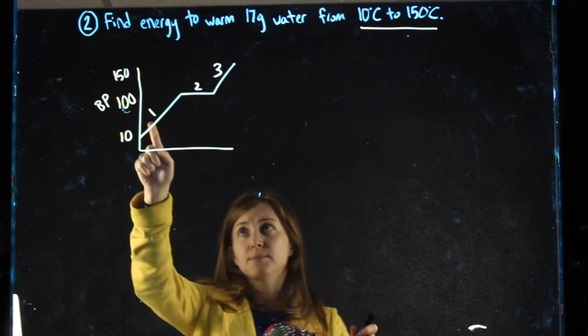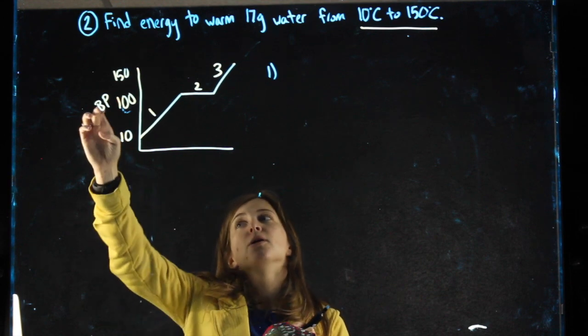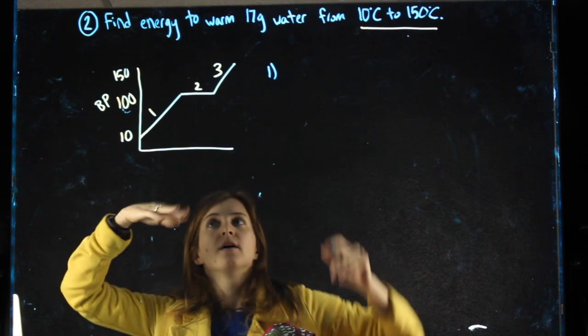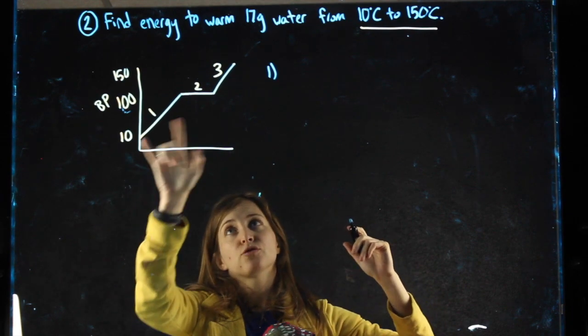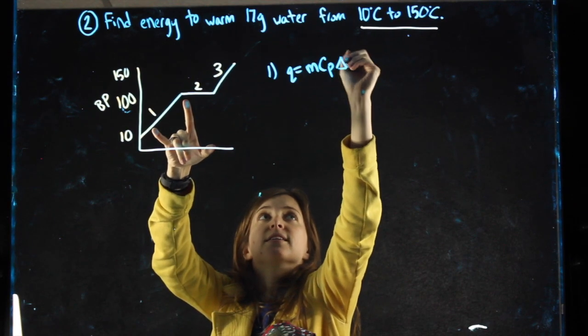For my first step, step number one, I am below the boiling point, above the melting point, so I know I'm dealing with liquid water. Change in temperature, because it goes from 10 to 100 in that step. Q equals MCP delta T.